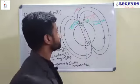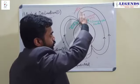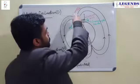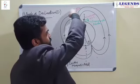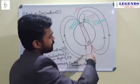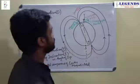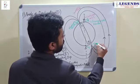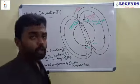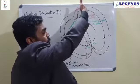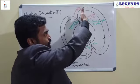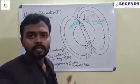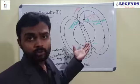We know what a geographic axis is. The geographic axis is the straight line passing through the north and south pole of our Earth. And the magnetic axis is the straight line that passes through the magnetic north and magnetic south of our Earth. If I cut a plane vertically through this geographic axis at any place, we will get a plane that is called the geographic meridian.